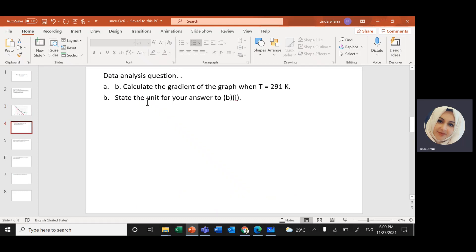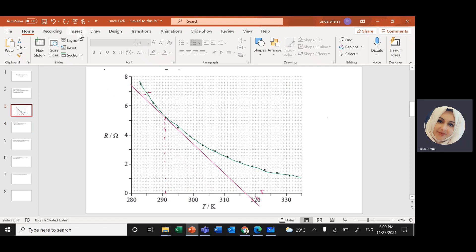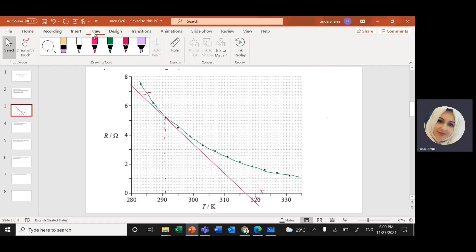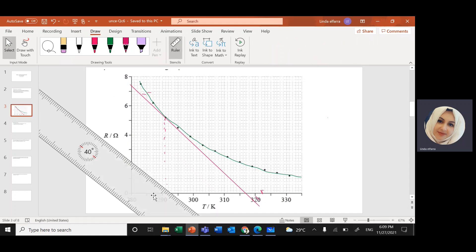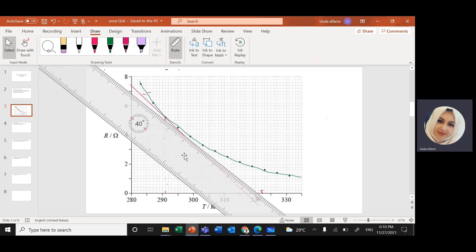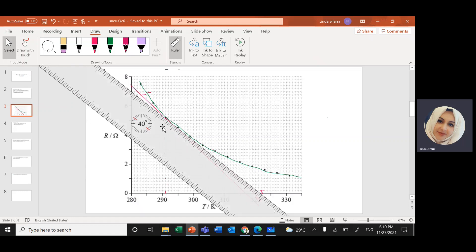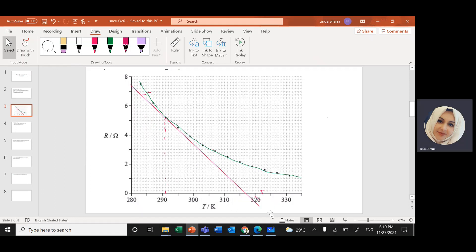Next, calculate the gradient of the graph when temperature is 291 Kelvin. So I will come and get a ruler. Put the ruler at 291 and draw a tangent line. Extend this tangent line to find the slope. So we draw the tangent line. How we're going to calculate the gradient or the slope will go to the extremist point.